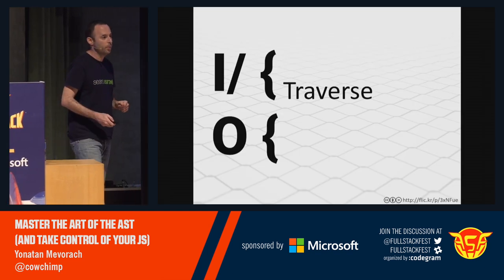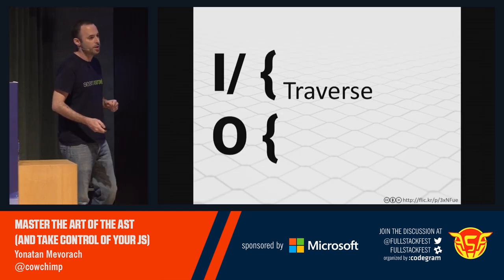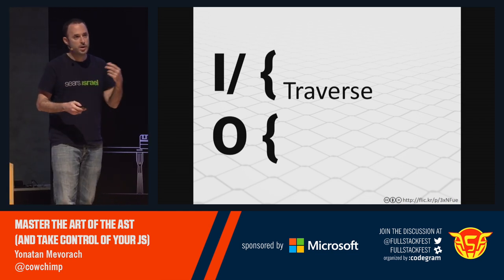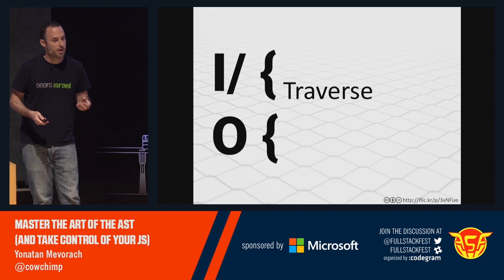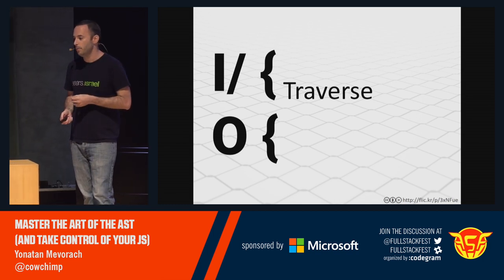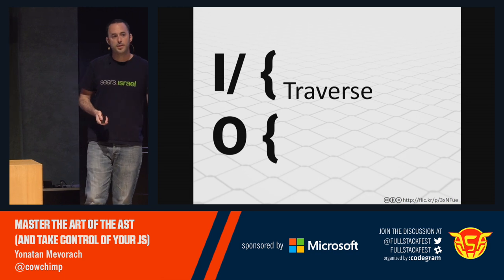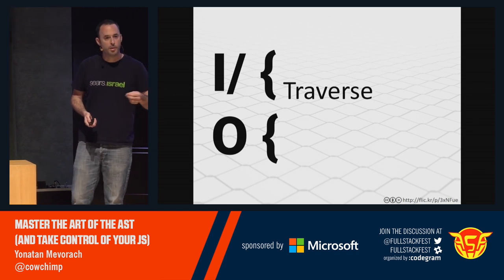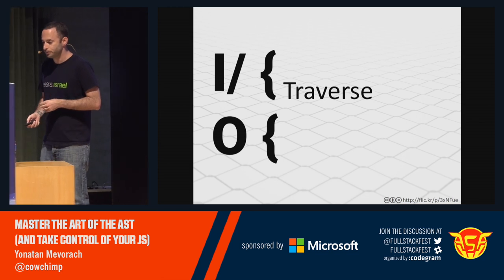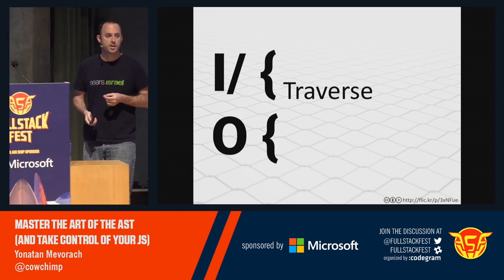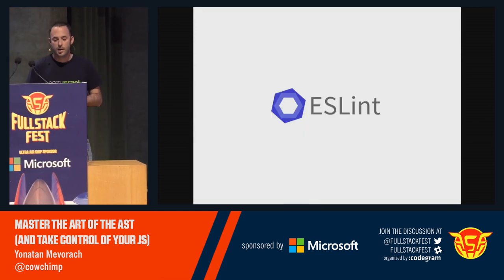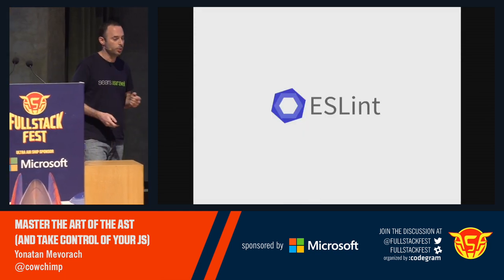Now let's talk about the traverse step. Why do we need to traverse our AST? If we're reading JavaScript and trying to analyze something about that JavaScript, we only care about some elements or attributes of our code, not all of them. That means we first need to find the nodes we care about to solve whatever problem we're trying to solve. Let's talk about the traverse step in the context of the first problem we're going to solve today together — writing your own ESLint rule.